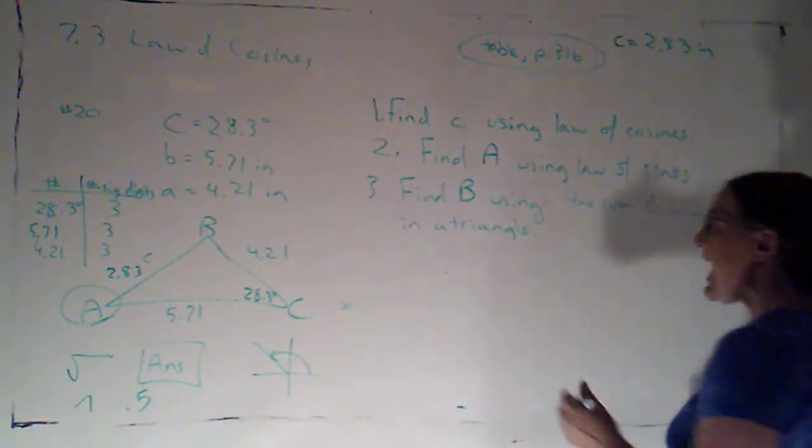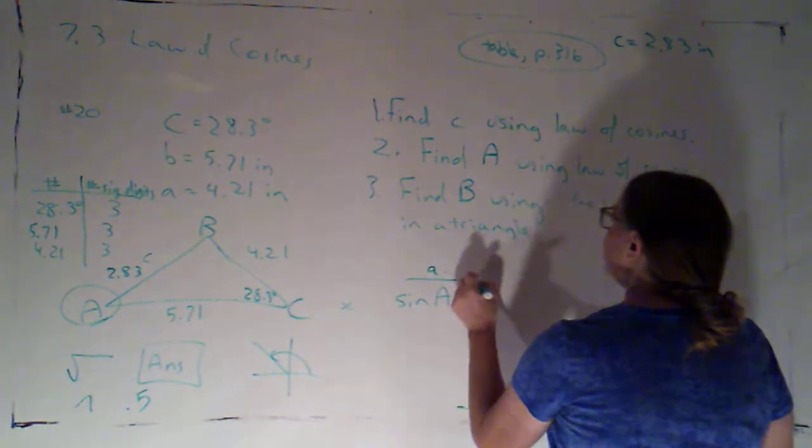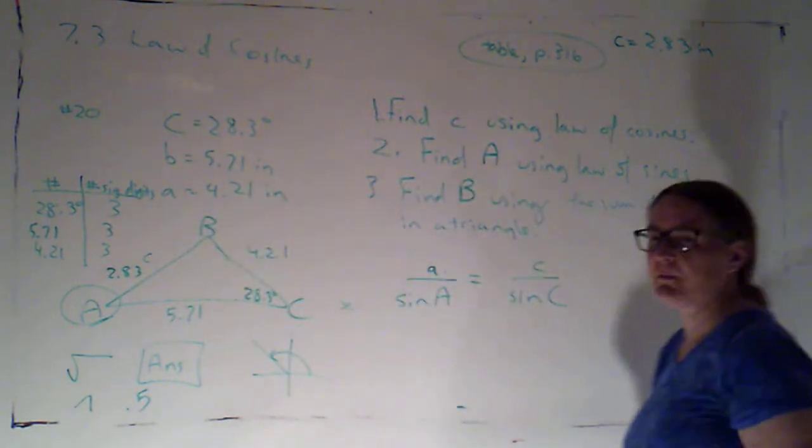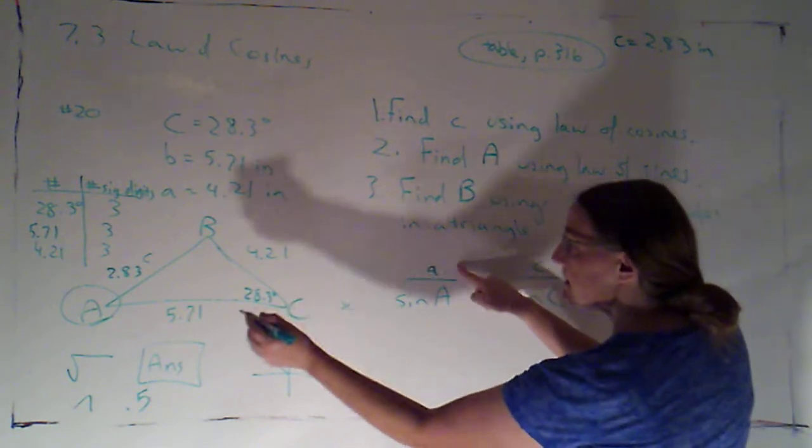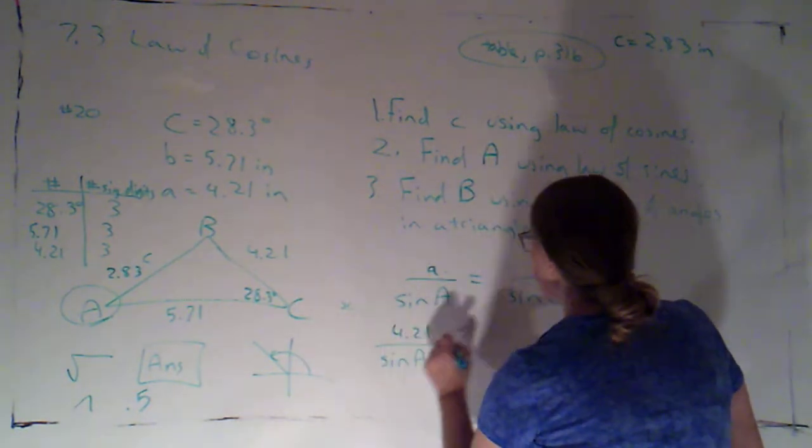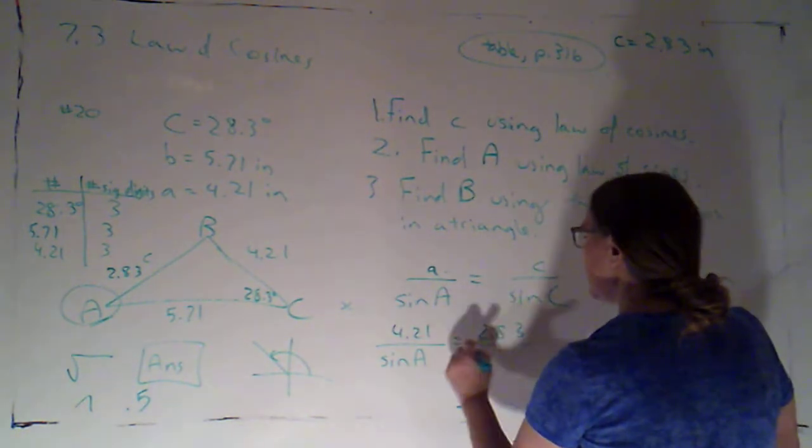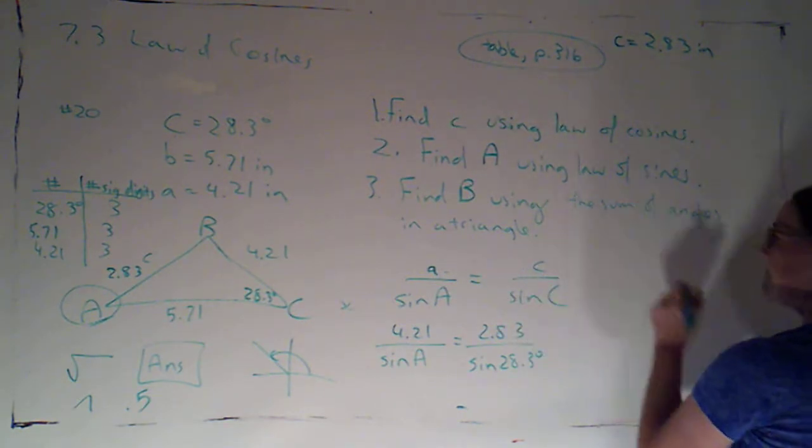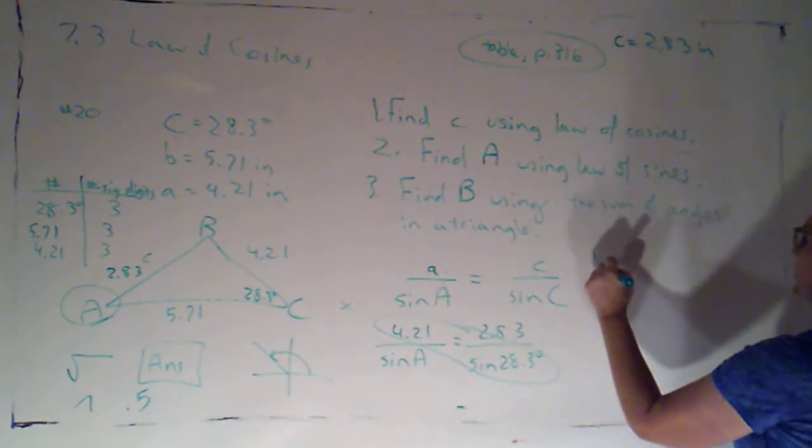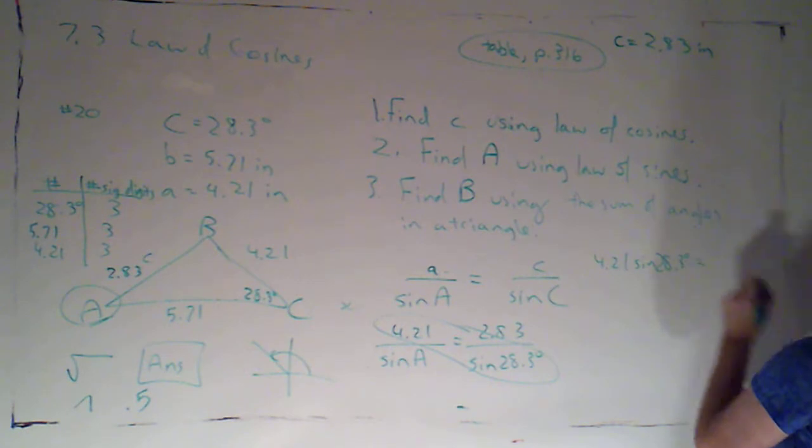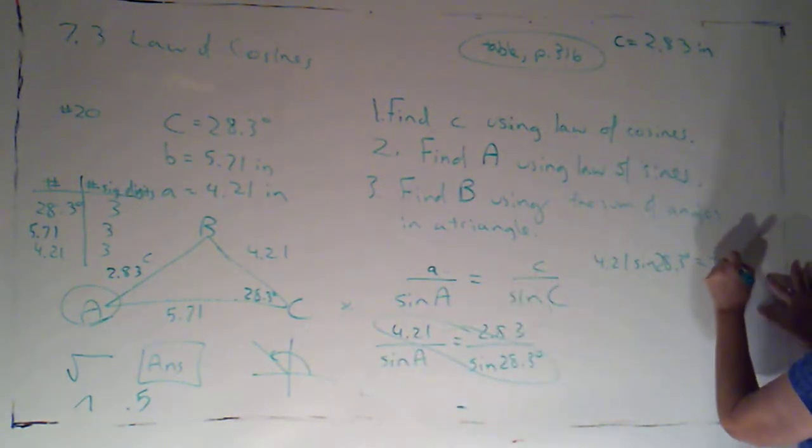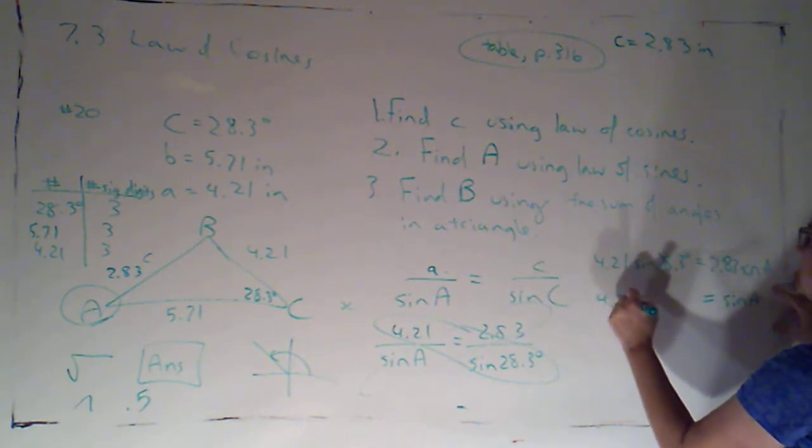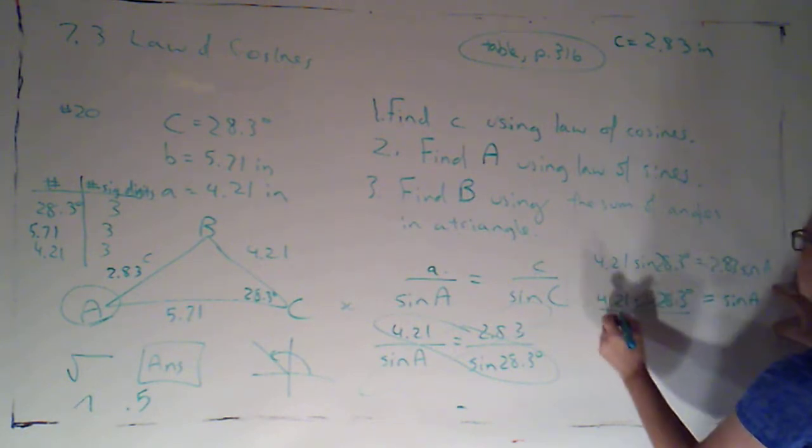Okay, so, if I want to find A, I'm going to say A over sine A is equal to, and it has to be C over sine C, because I now know side C and angle C, but I still don't know angle B. Okay, alright, so now I know A, that was 4.21, over sine of A is going to equal C we just solved for was 2.83, over sine of C is going to be sine of 28.3 degrees. So, I can cross multiply, so I'm going to get this diagonal product, so 4.21 times sine of 28.3 degrees is equal to this diagonal product, 2.83 times sine of A. So, now, I can solve for sine of A, sine of A is 4.21 times sine of 28.3 degrees over 2.83.